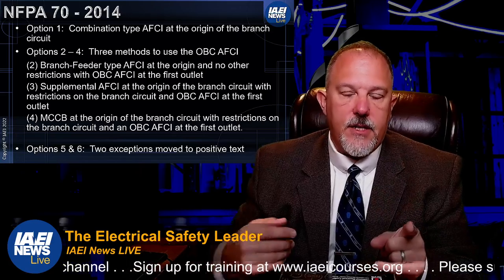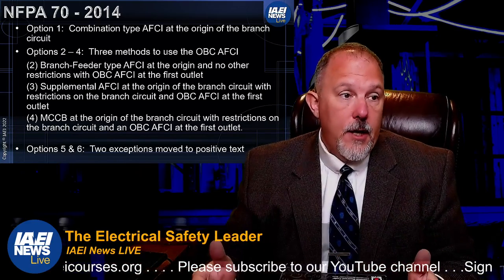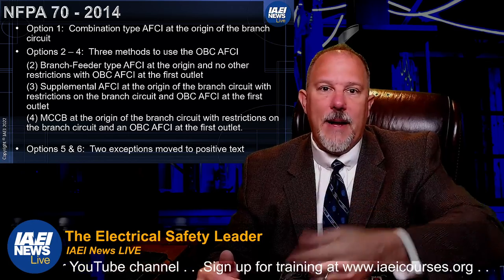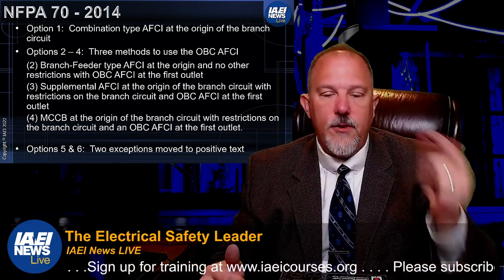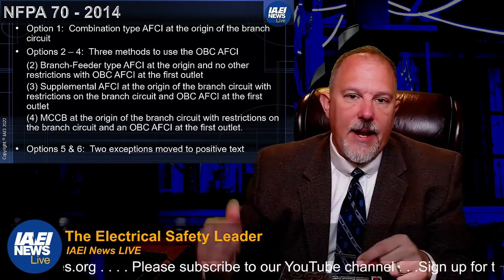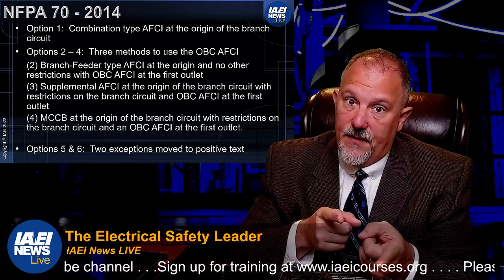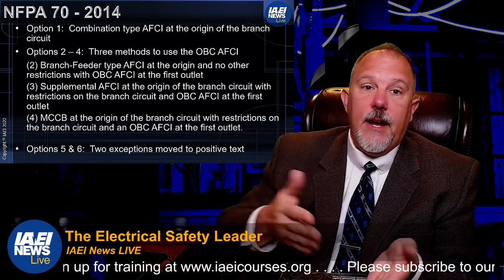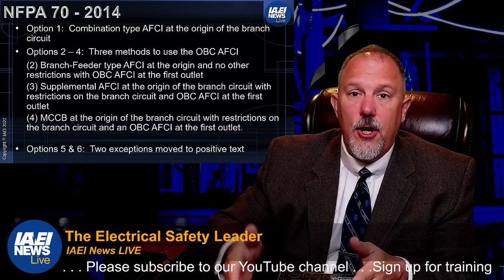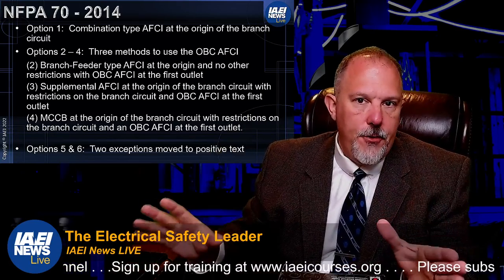Option one is the combination type AFCI at the origin of the branch circuit. This is not new — it's been a requirement since the beginning, just updated from branch feeder to combination type in the 2005 code with an enforcement date of 2008. Any structure built to the 2008 NEC or later would already meet option one. Options five and six — the OBC with a protected home run in raceway or concrete — were moved from exception language into positive code text.